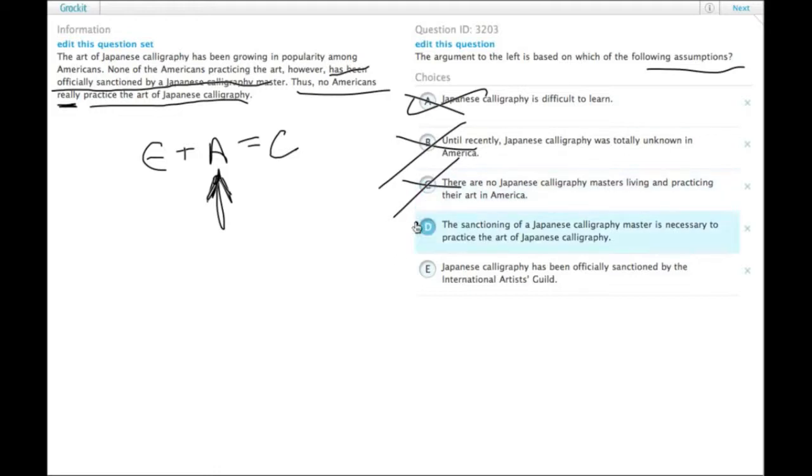D: The sanctioning of a Japanese calligraphy master is necessary to practice the art of Japanese calligraphy. That is the prediction we made—that there was a connection between being sanctioned and really practicing it. So it's answer choice D.